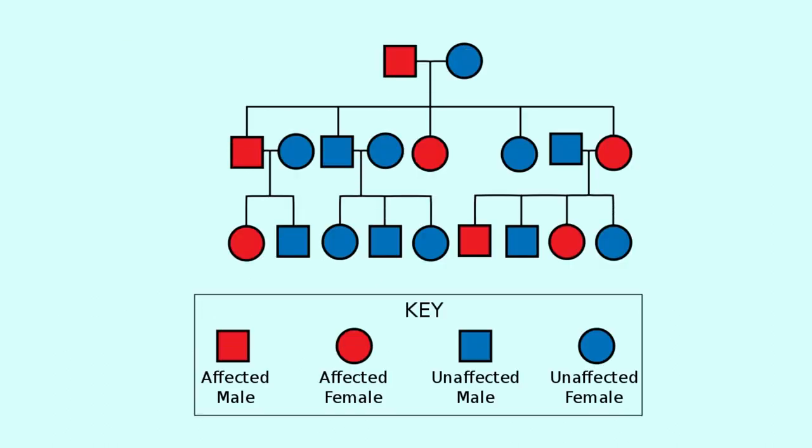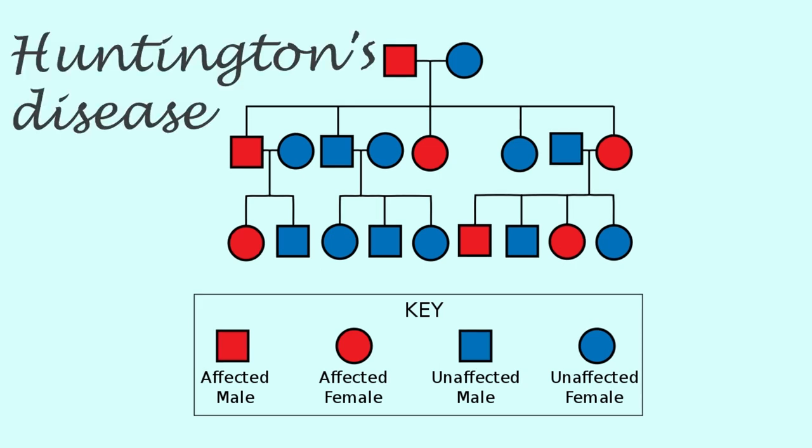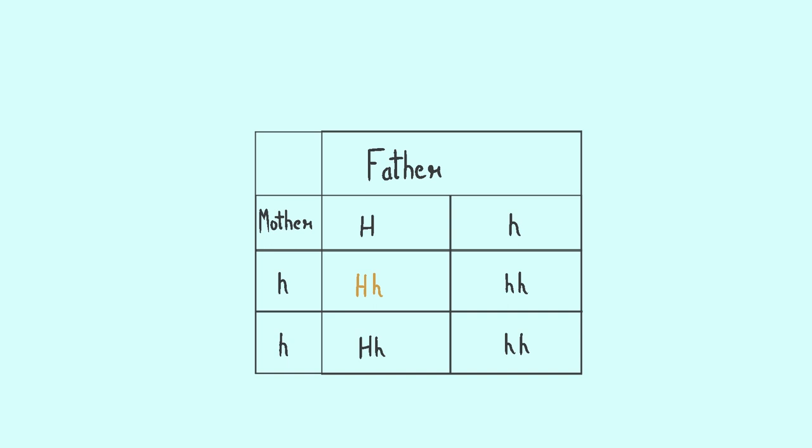This is a pedigree chart showing autosomal dominant inheritance of Huntington's disease, and this is the Punnett square for it. As you can see, there is a 50% chance that each offspring will inherit the Huntington's disease gene from their father.